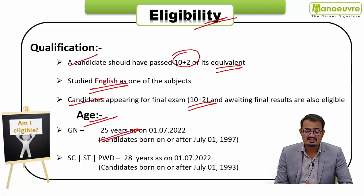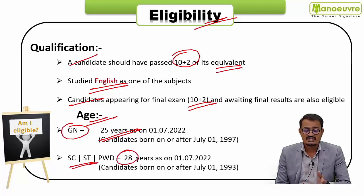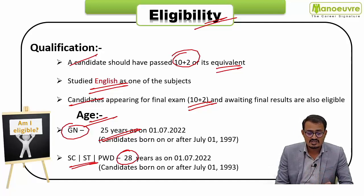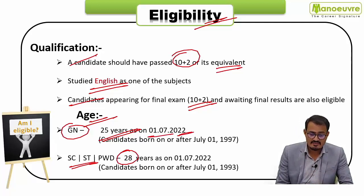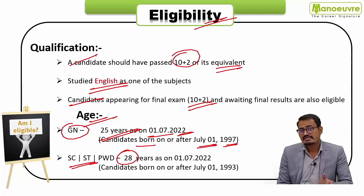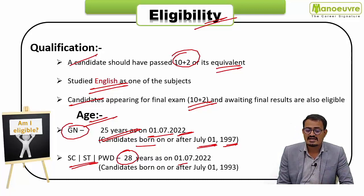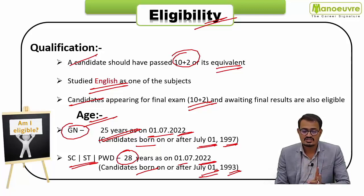For the age criteria: 25 years for the General category and 28 years for SC/ST and PWD categories. This means candidates born on or after 1st July 1997 for General, and born on or after 1st July 1993 for SC/ST and PWD categories, as on 1st July 2022.